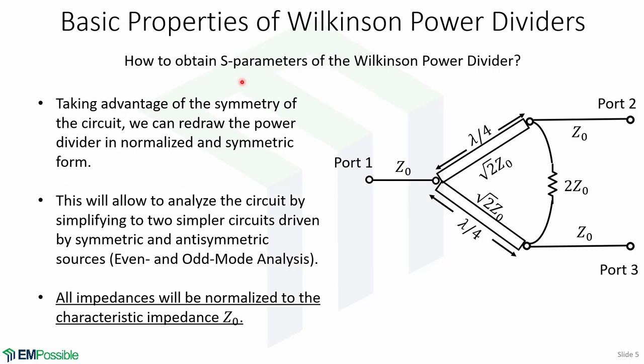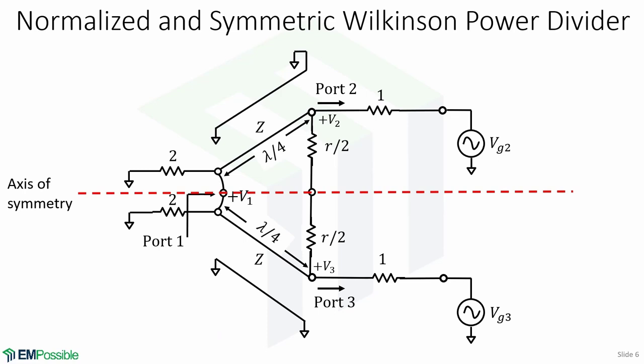Now we will try to obtain the S-parameters of the Wilkinson power divider. Taking advantage of the symmetry of the circuit, we can redraw the power divider in normalized and symmetric form. This will allow us to analyze the circuit by simplifying it to two simpler circuits driven by symmetric and anti-symmetric sources, which are called even and odd mode analysis. All impedances will be normalized to the characteristic impedance Z-naught.